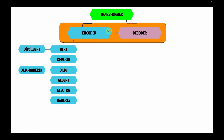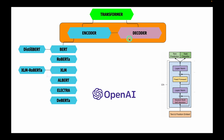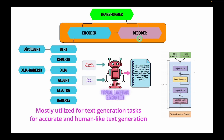Now that we have gone through important encoder-only architectures, let's look into decoder-only architectures. The development of transformer decoder models has mostly been driven by OpenAI. These models are mostly utilized for text generation tasks because of how well they predict the next word in a sequence.